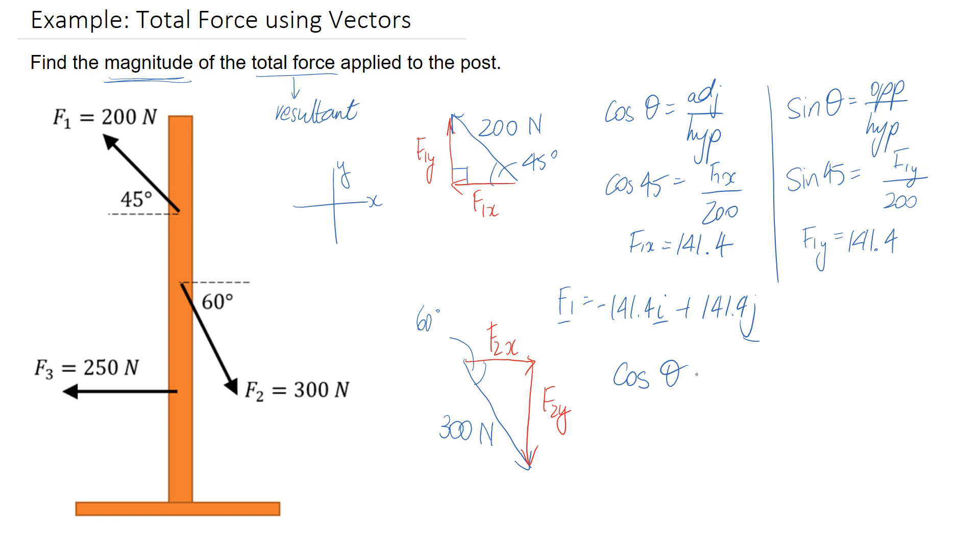We need to figure out the length of F2x and F2y. I'm going to do this again by doing cos of our angle as a starting point. So if we do cos of 60 degrees, in this case, we end up with the adjacent side, which is F2x, divided by the hypotenuse, which has a length of 300. So if we rearrange, 300 times cos of 60 works out to 150.